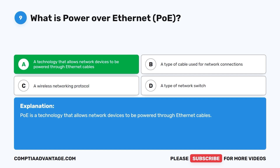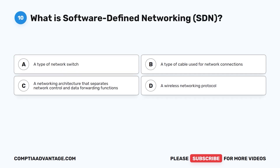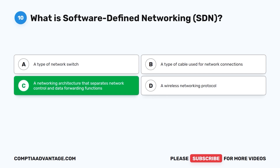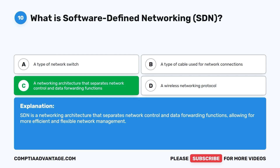PoE is a technology that allows network devices to be powered through ethernet cables. Question ten: What is software defined networking, SDN? A. A type of network switch. B. A type of cable used for network connections. C. A networking architecture that separates network control and data forwarding functions. D. A wireless networking protocol. The correct answer is C: a networking architecture that separates network control and data forwarding functions, allowing for more efficient and flexible network management.